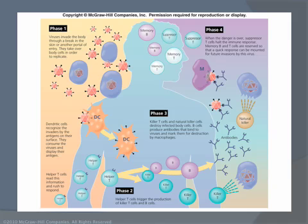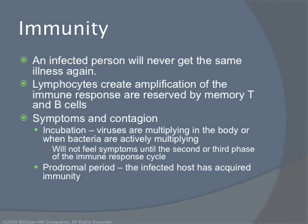In phase four, when the danger is over, suppressor T cells halt the immune response, and memory is reserved for a quick response that can be mounted in the future if the virus ever comes back. That's why, for example, if you had chicken pox as a child, you will not have it again, because your memory T and B cells will remember it. An infected person does not get the same illness again.